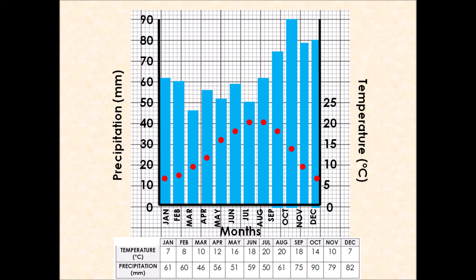Once all your temperature dots are on, join them up dot to dot. Don't connect the line to the left or right-hand axes — it should be a floating line. Finally, make sure you give the graph a clear title. This is a climate graph for Liverpool, and that concludes this brief introduction to weather and climate, along with practising your climate graph skills.